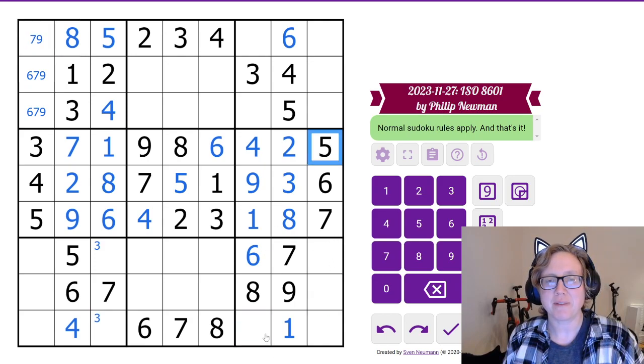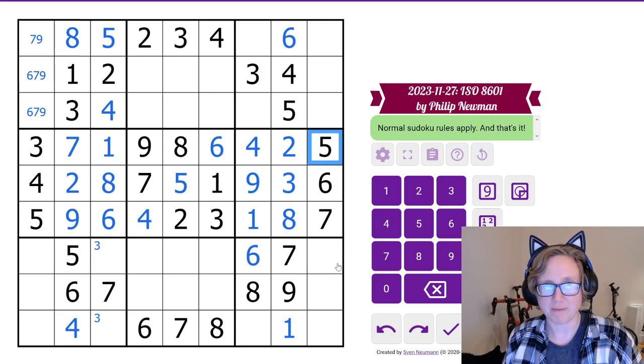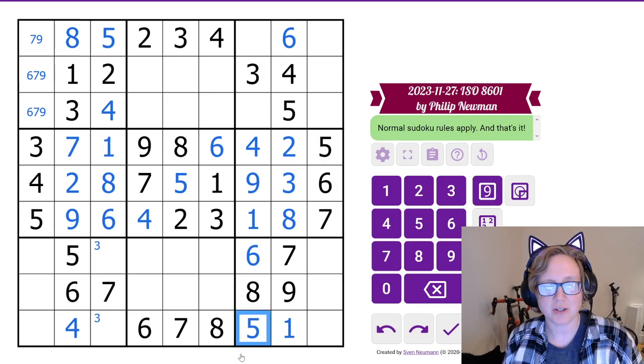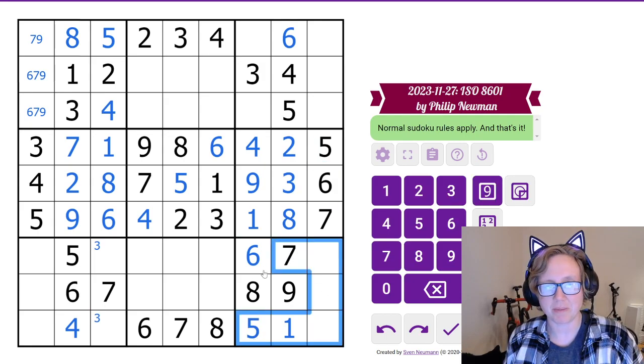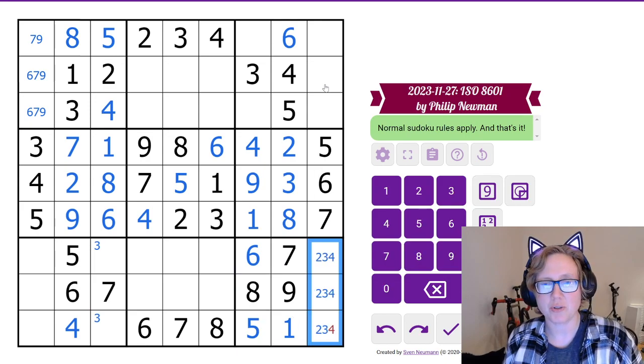Down here, there's a hidden 5 in this region, because the 5 sees these 3 cells, so this has to be a 5, it's our only position for a 5 in box 9. So the remaining digits there are 2, 3, and 4.